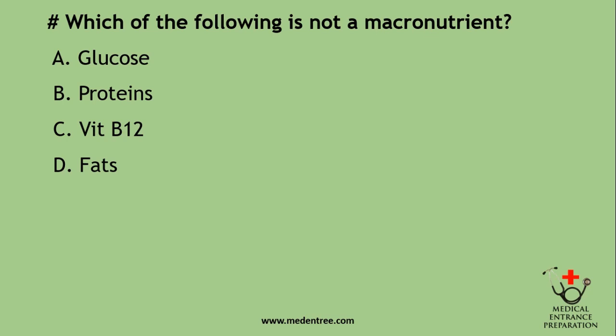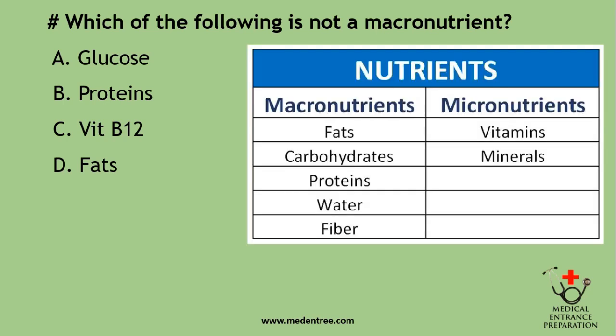Which of the following is not a macronutrient? Options: Glucose, Proteins, Vitamin B12, or Fats. Macronutrients are generally carbohydrates, proteins, fats, water, and fibers — those required in large quantities by the body. Micronutrients are required in very small quantities; vitamins and minerals come under micronutrients. So the correct answer is Vitamin B12, also called cyanocobalamin.